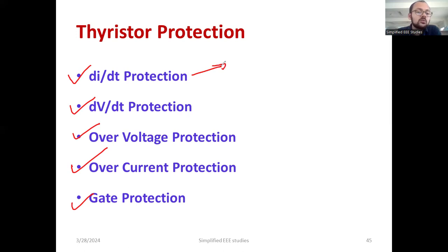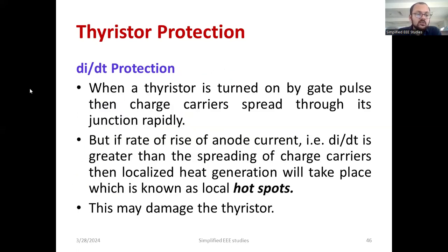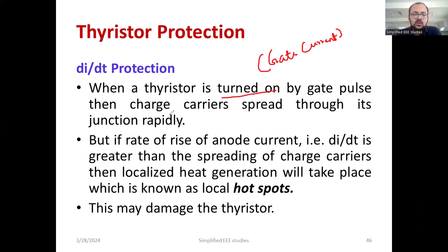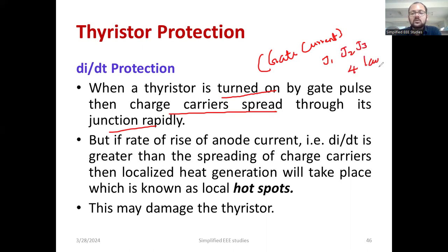First, we are going to talk about what is DI by DT rating. DI by DT means rate of change of current with respect to time. The main thing is how the thyristor is turned on — we require a gate current to turn on the SCR. When a thyristor is turned on by a gate pulse, the charge carriers spread through its junctions rapidly. There are different junctions for the three-junction, four-layer device: J1, J2, and J3.